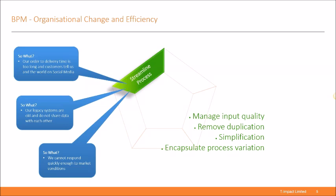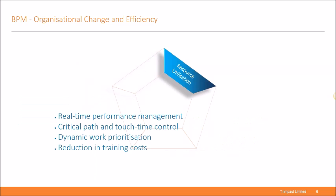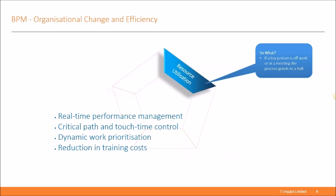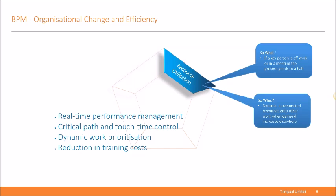Next is resource utilization. We can deliver benefits like real-time performance management, dynamic work prioritization, and critical path and touch-time control. Have you ever suffered when one key person is on holiday and an entire business area grinds to a halt? Wouldn't it be great if you could dynamically move resources around when one department is busy and one is quiet? We've seen this in real life with a client where a key team member was away for a week and the whole process fell down with flags escalated to senior managers. Another example is ensuring staff are completing all their work, not just the parts they find easy to do.